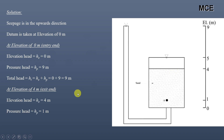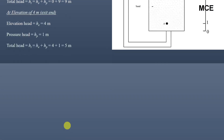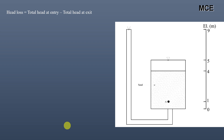At the elevation of 4 meters, which is the exit end of the soil sample, the elevation head is 4 meters and the pressure head is 1 meter — the height of water above this end. Total head is 4 plus 1, which equals 5 meters. Total head at entry is 9 meters and total head at exit is 5 meters, so head loss through the soil sample is 9 minus 5, which equals 4 meters.